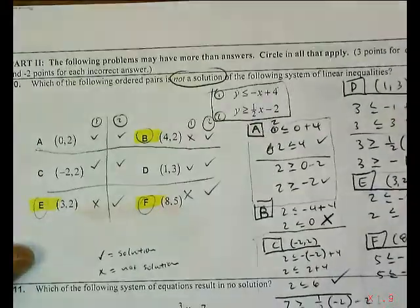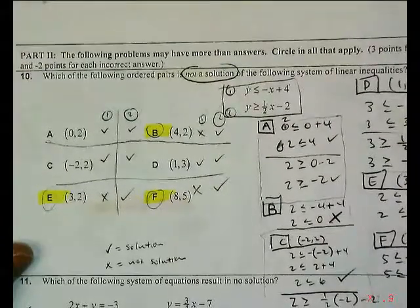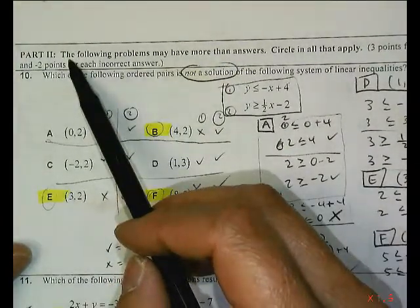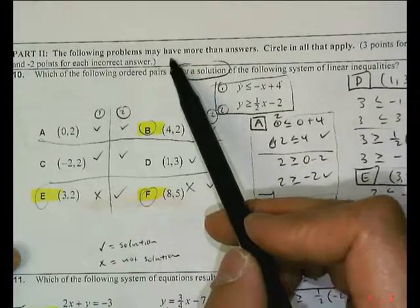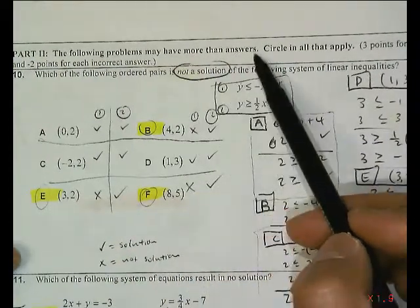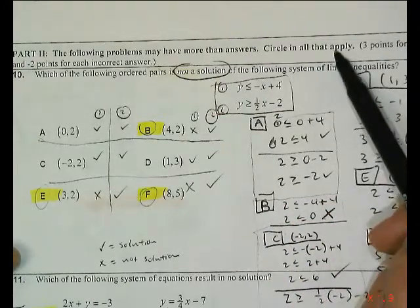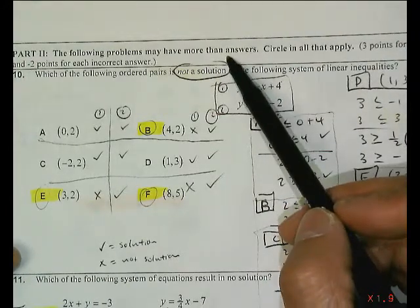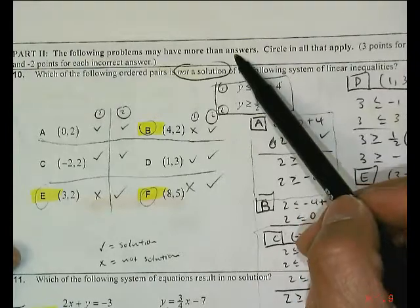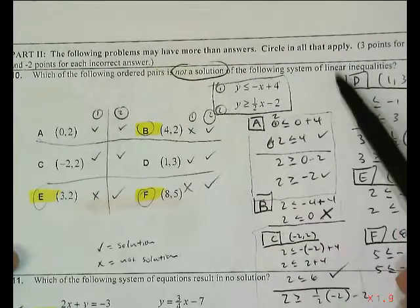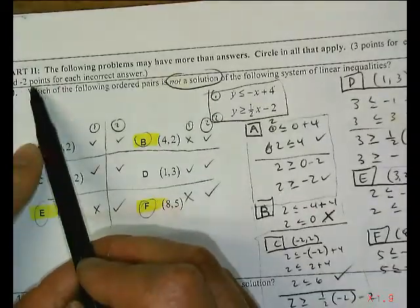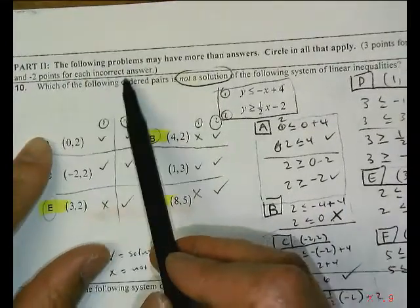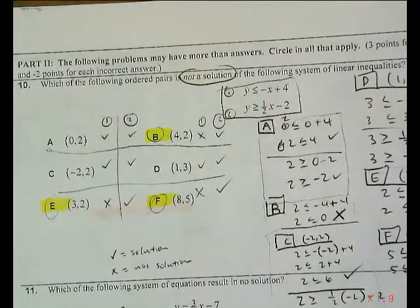Part two is probably the most difficult part of the test. I think everyone got it. Excuse the poor grammar. The following problems may have more than one answer. Circle all that apply. So it implies that it's a multiple, multiple choice question, which means there could be zero, one, or all of them. I even told you how I would score it. Three points for each correct and negative two for each incorrect answer. If you just circled all of them doesn't mean you're going to get the most amount of points.